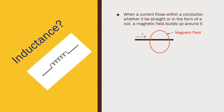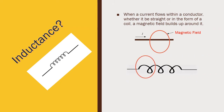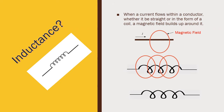Now, if we want to increase this magnetic field around that conductor, we have to change this straight conductor in the form of a coil, so that there will be more magnetic field around that coil conductor. Depending upon the number of turns, there will be more magnetic field, and the total magnetic field will be higher than the straight conductor. This is called an inductor.